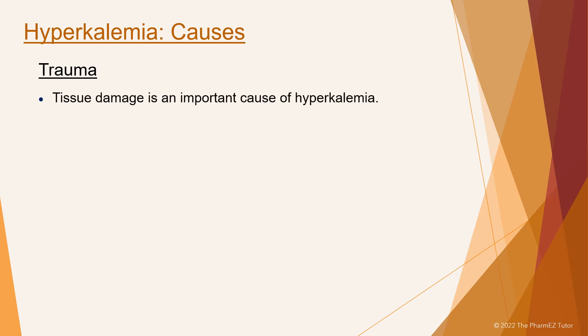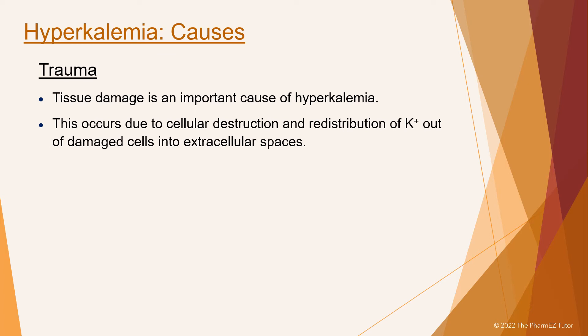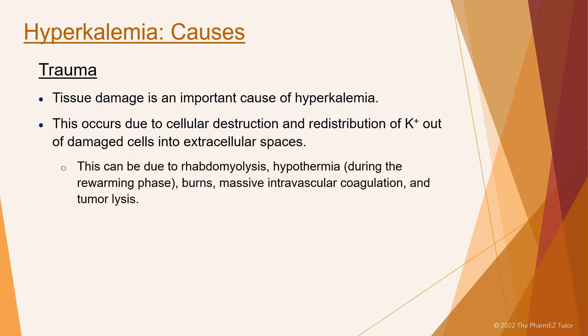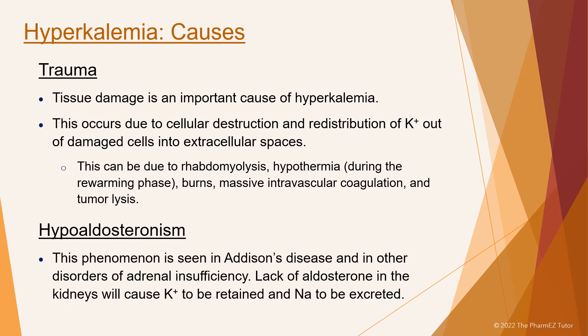Trauma — tissue damage is an important cause of hyperkalemia. This occurs due to cellular destruction and redistribution of potassium out of damaged cells into extracellular spaces. This can be due to rhabdomyolysis, hypothermia, burns, intravascular coagulation, and tumor lysis. Another cause is hypoaldosteronism, seen in Addison's disease and other disorders of adrenal insufficiency. Lack of aldosterone in the kidneys will cause potassium to be retained and sodium to be excreted.